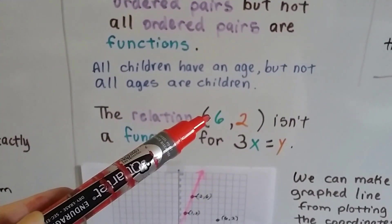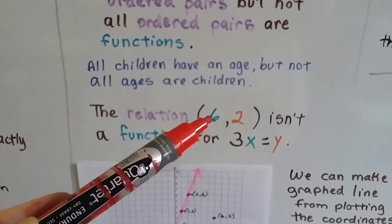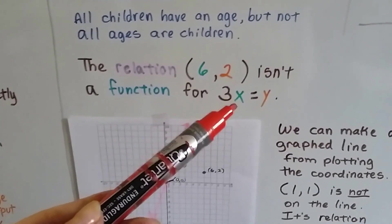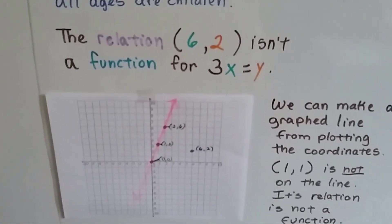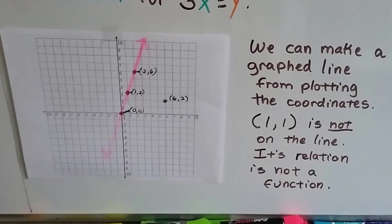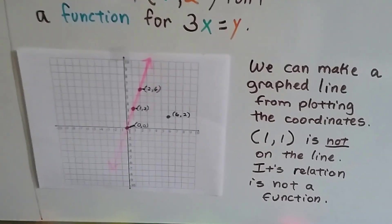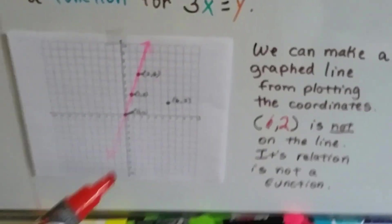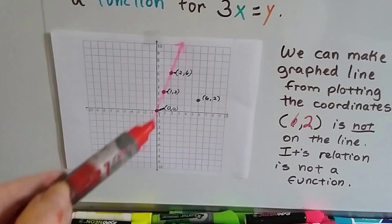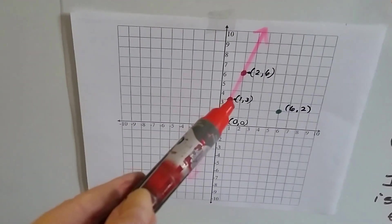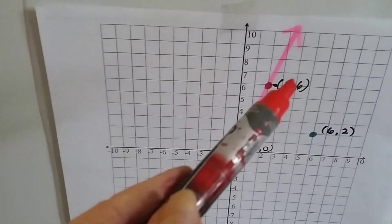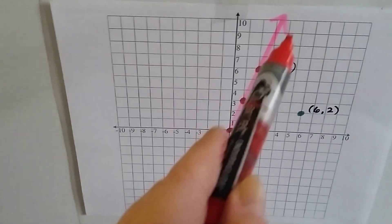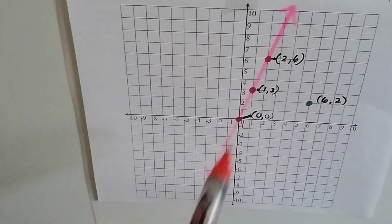So take a look at the relation of 6 for x and 2 for y. That does not make this true. That is not a function for 3x equals y. And we can make a graphed line from plotting the coordinates. Sorry, this is supposed to be 6 and 2. We could plot the coordinates of all of our other values, the 0, 0, the 1 and the 3, the 2 and the 6. And when we plot them, we can draw a straight line. And the 0, 0 is the origin.